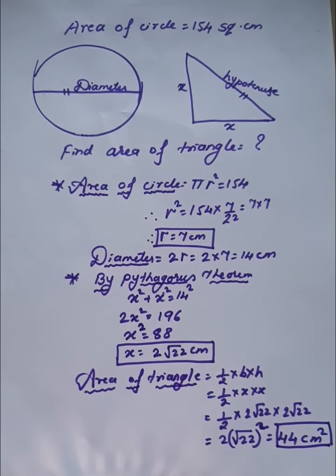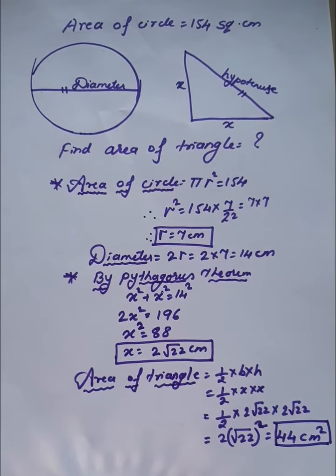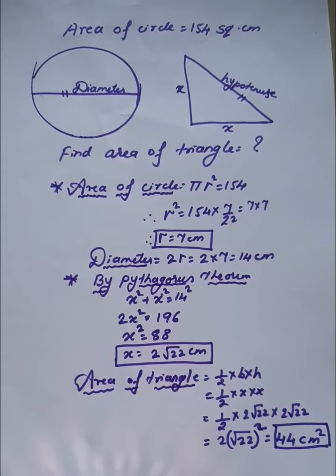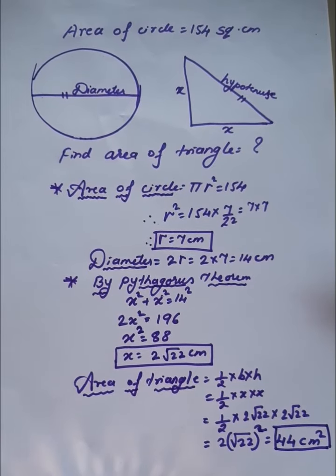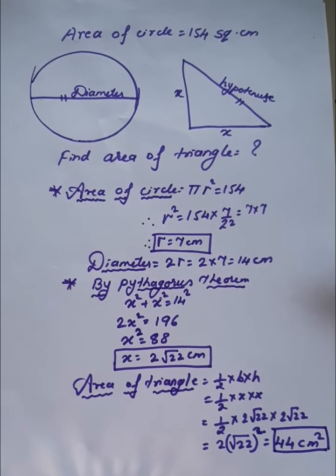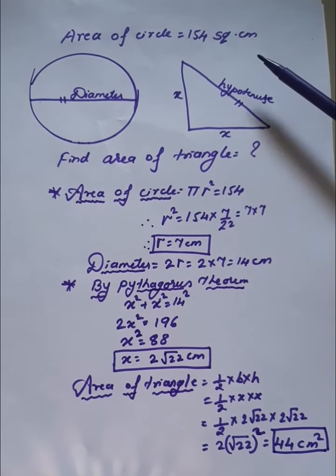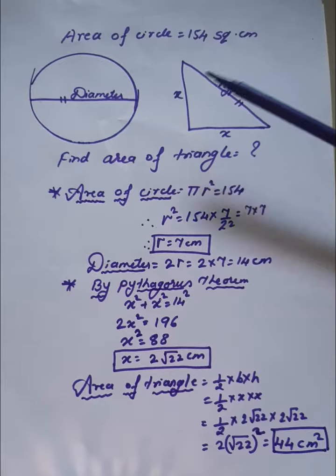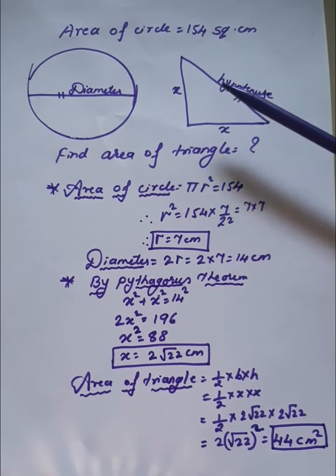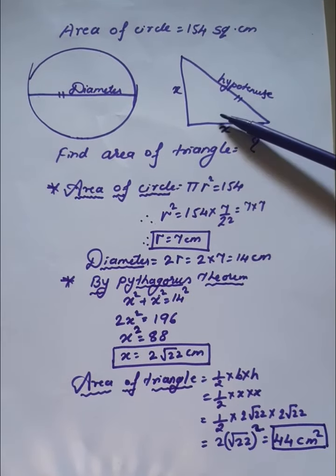Hello, today I will explain a four to five marks question. This question will come on the last page of your board paper exam. Here we have the area of a circle, 154 square centimeters, and we need to find the area of the triangle.